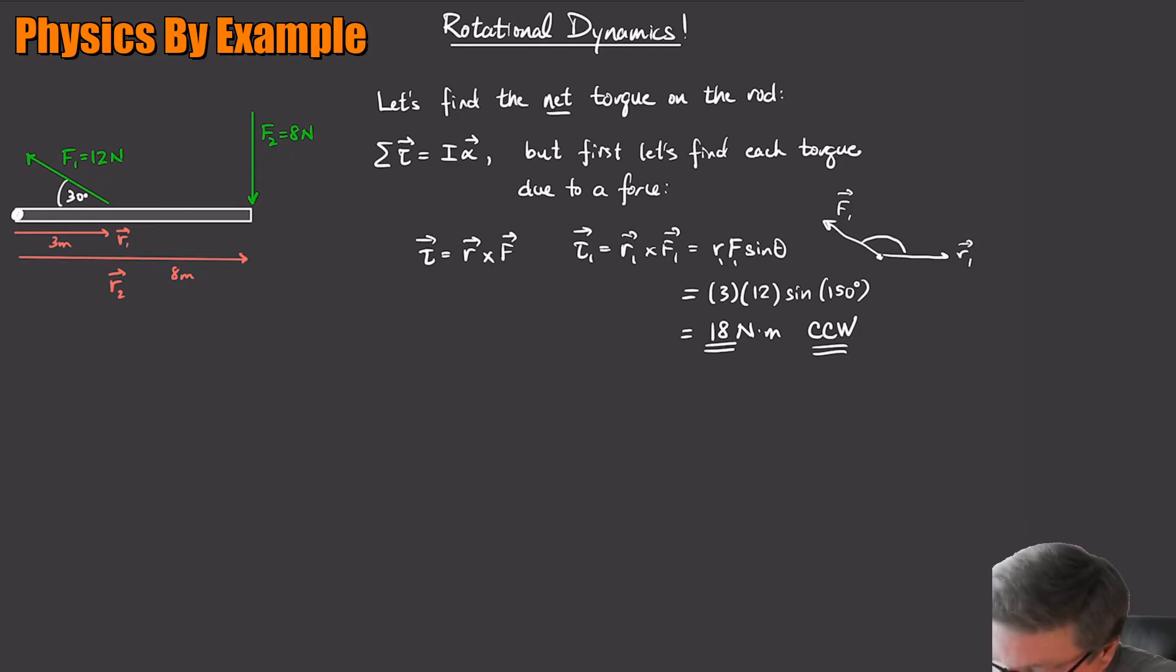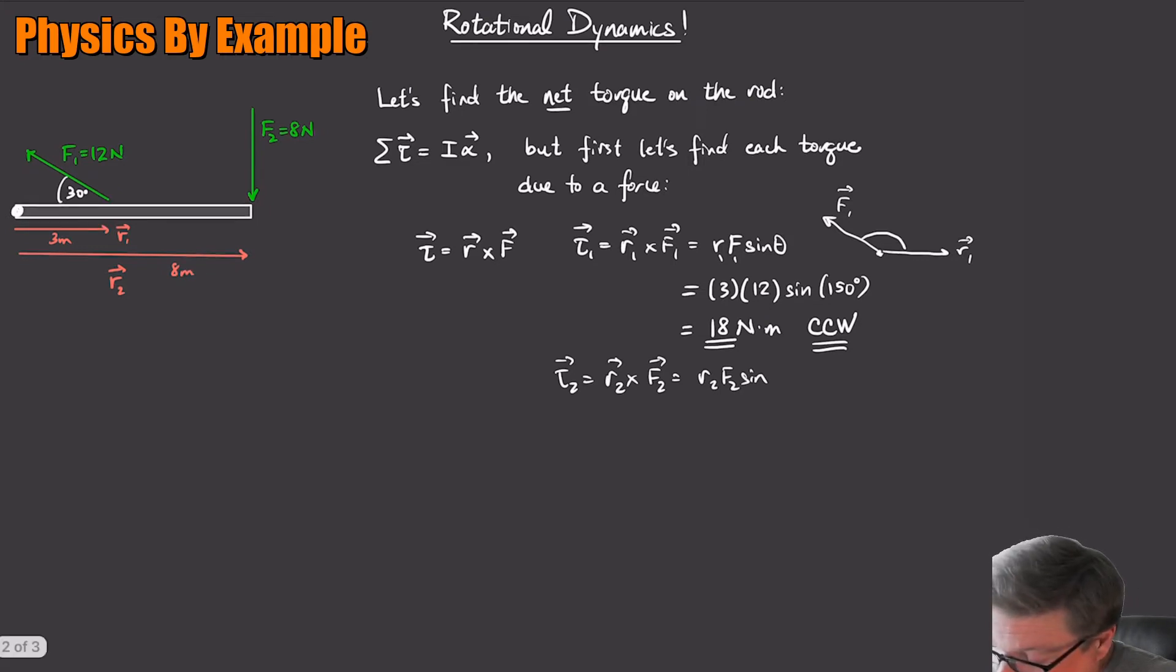How about torque 2? Torque 2 is just going to be R2 cross F2. So that's going to be R2 F2 sine of the angle between those guys, sine of theta. So what's this going to be? R2 is going to be 8. I'll leave the units off. F is 8 sine of theta.